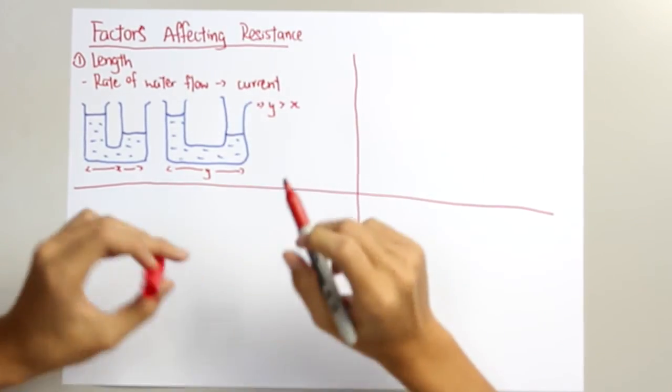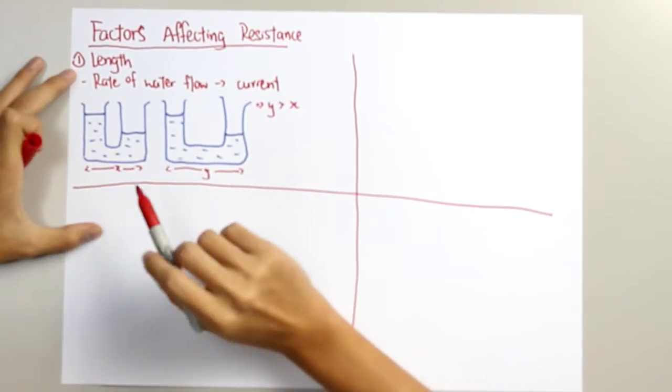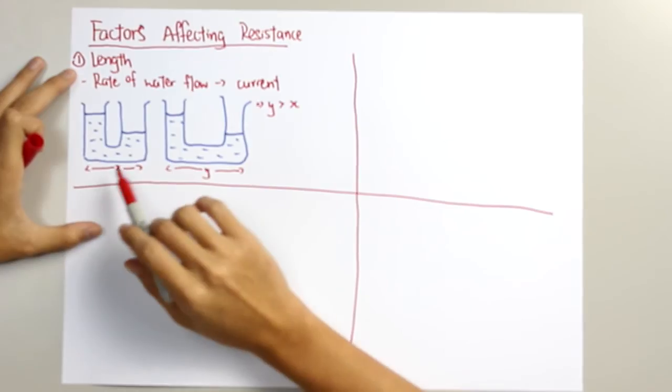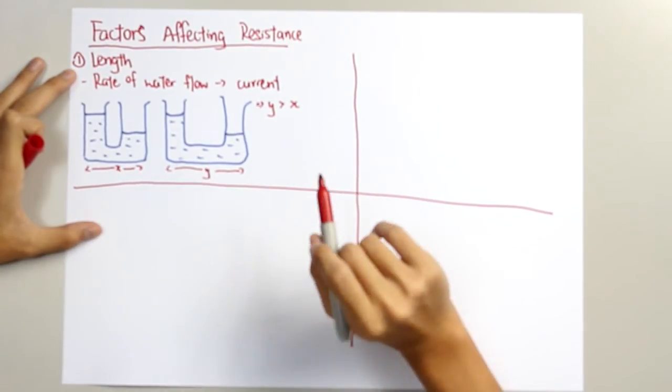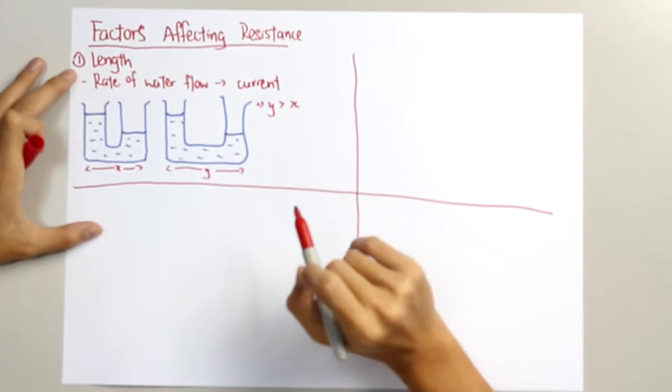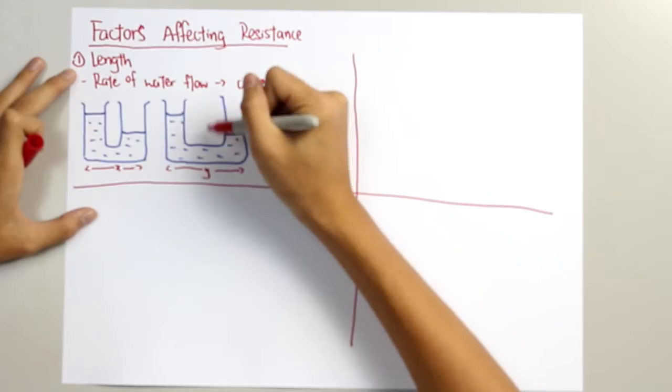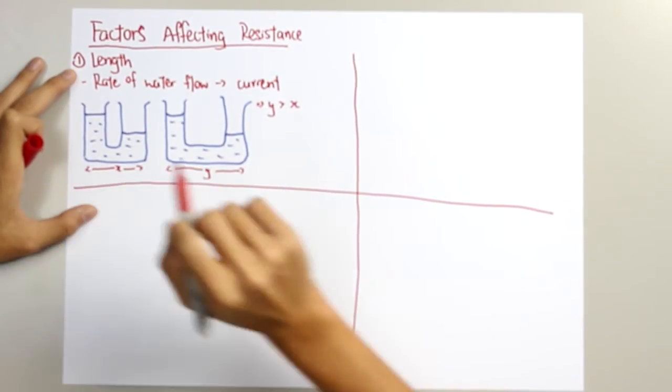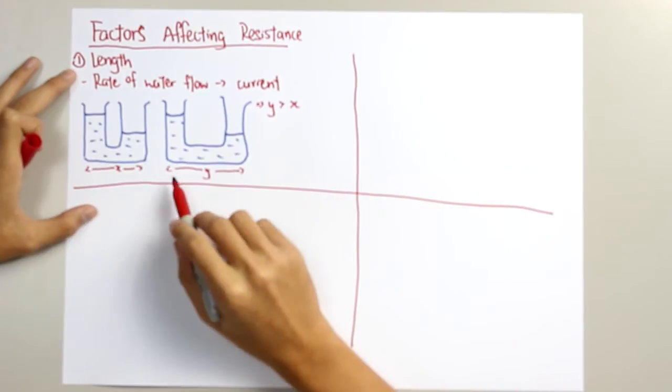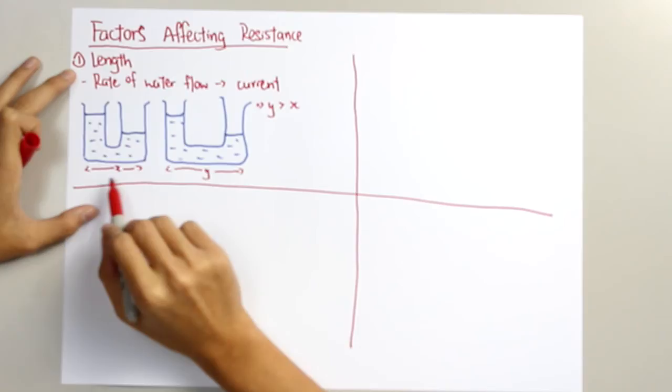Since we compared the rate of flow of water to the current, we can say that the faster the water moves across these sections, the greater the current. Then, since the potential difference are same for both containers, the water will flow at the same rate. However, the length Y here is greater than the length of X here.